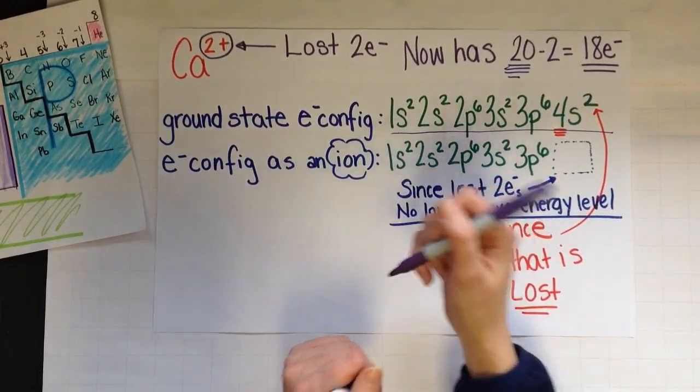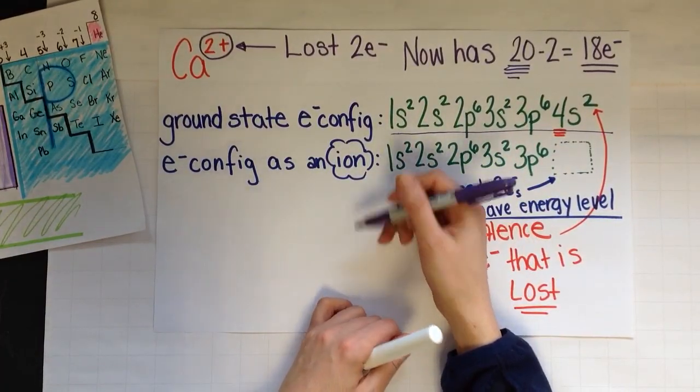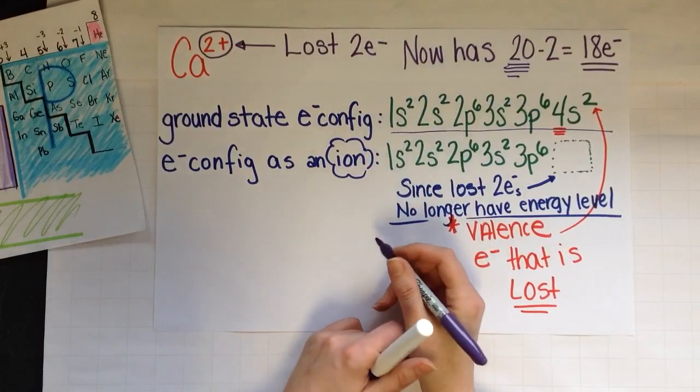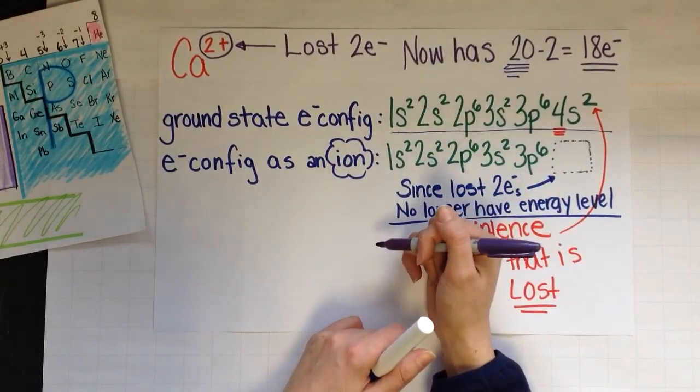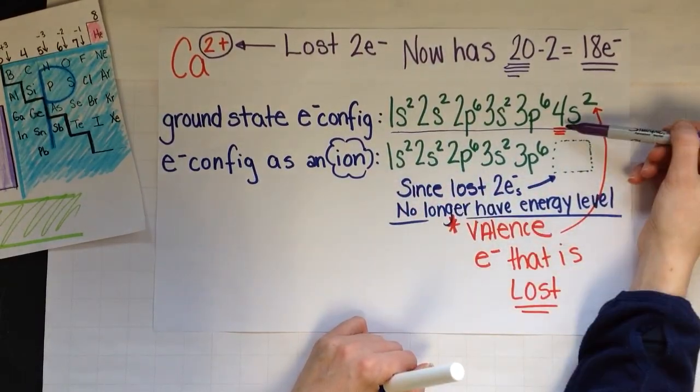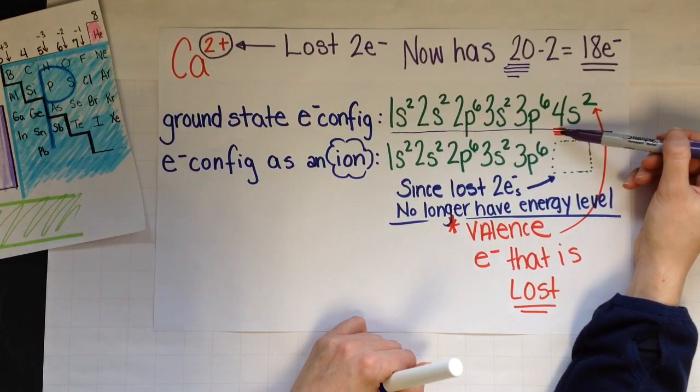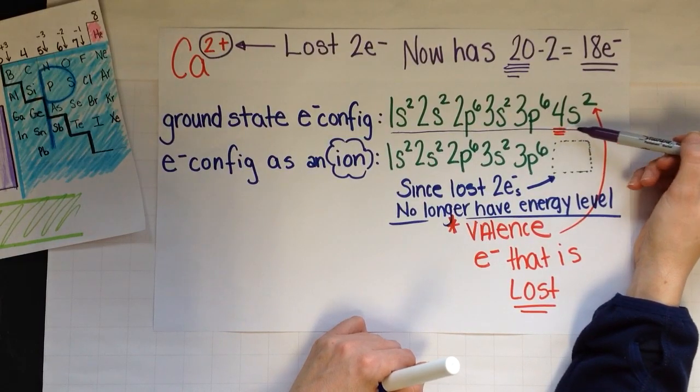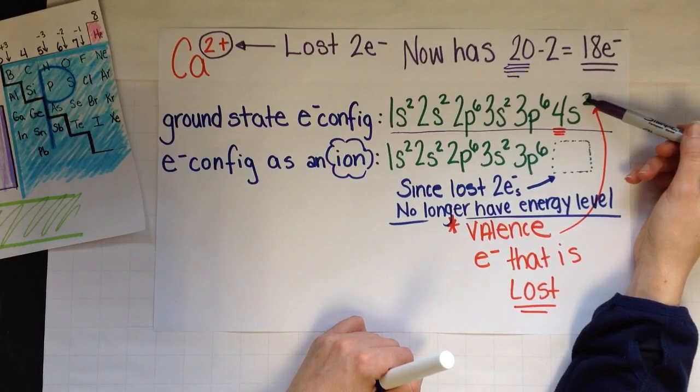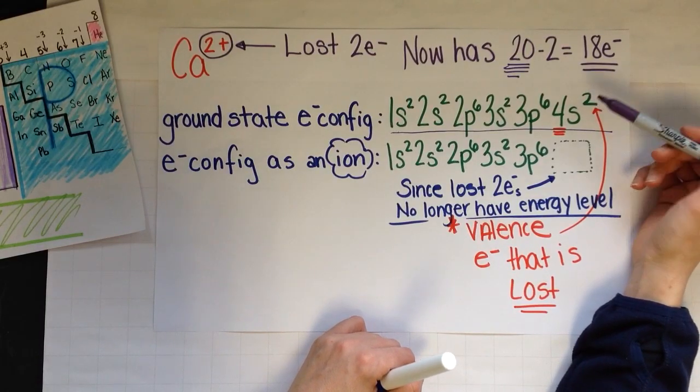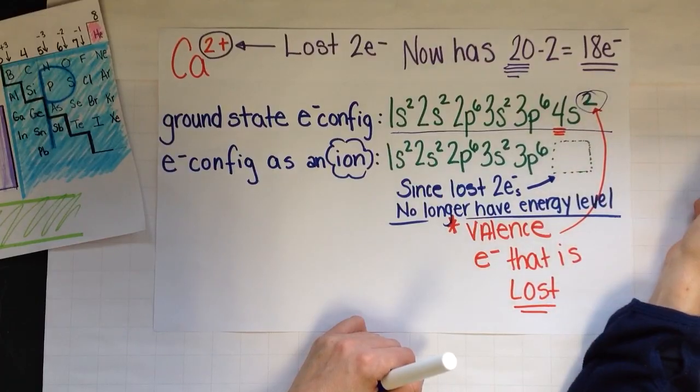Now I want to do the ion configuration. So what that means is I'm going to lose two electrons. Remember, you only gain and lose in your valence. So here is my valence, my outermost. 4 is the highest, furthest away, 4s2. And I'm going to lose two. Well, here are the two that I'm going to lose.